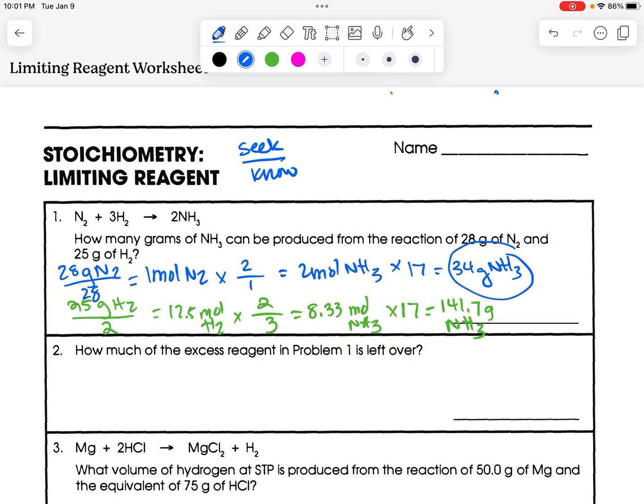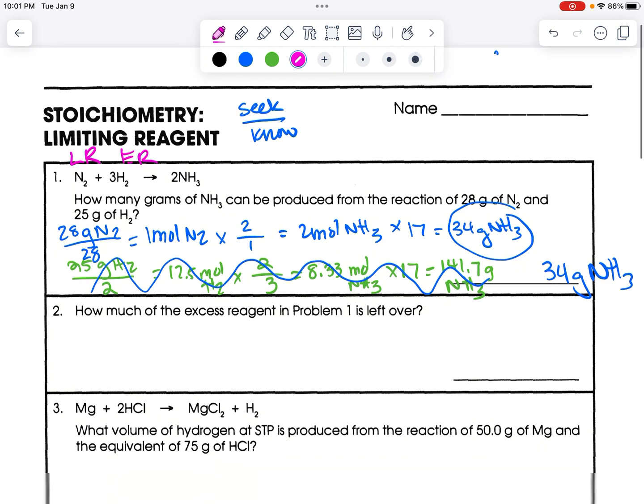Only one of these is actually going to happen, and it's the one that's the smaller of the numbers. So the smaller number is the 34 grams NH3. This bottom one didn't actually happen, because you were limited by how much you had. So the answer to this question is 34 grams NH3. Now, this tells me that the nitrogen is our limiting reagent, which means hydrogen is in excess, our excess reagent.